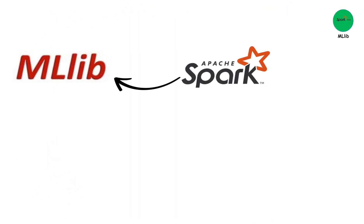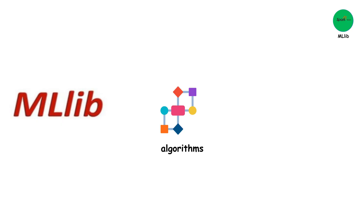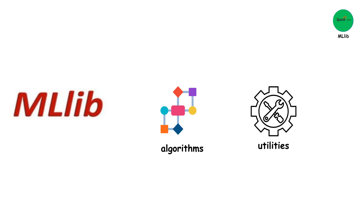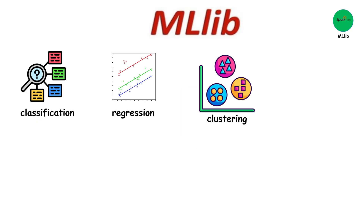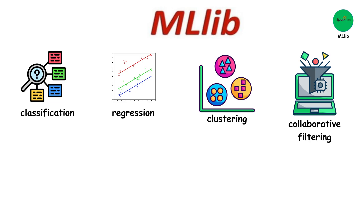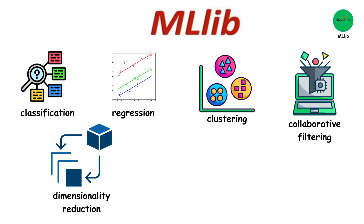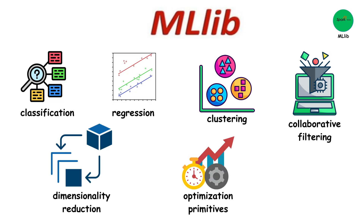MLlib is Apache Spark's scalable machine learning library. It provides a growing suite of algorithms and utilities including classification, regression, clustering, collaborative filtering, dimensionality reduction, and underlying optimization primitives.